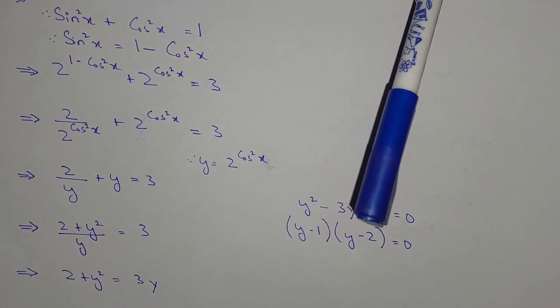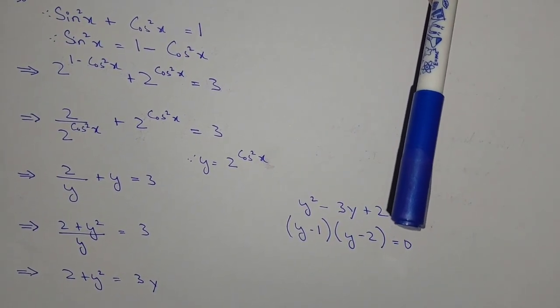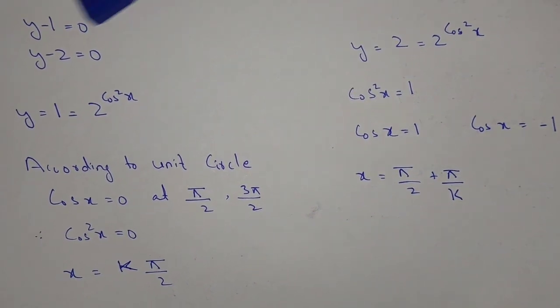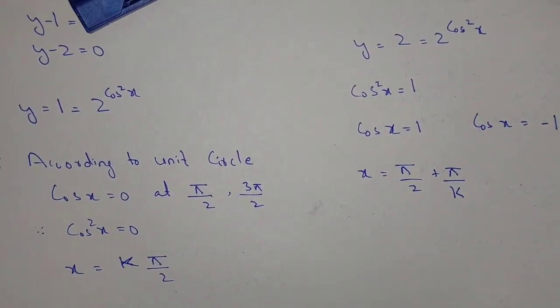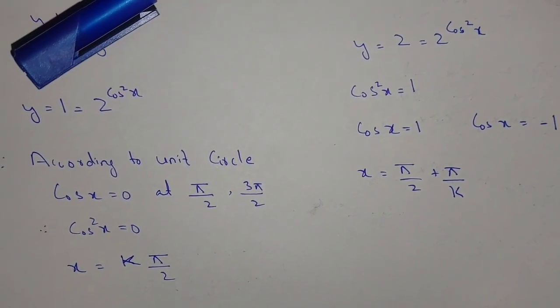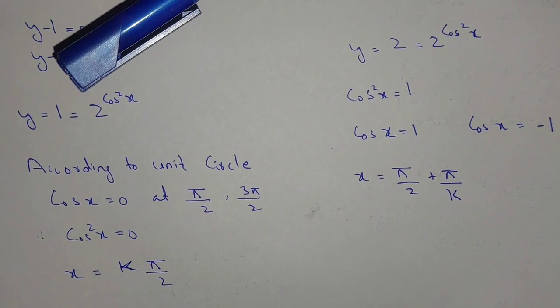Now factorizing, we get (y - 1)(y - 2) = 0. Here we have two equations: y - 1 = 0 and y - 2 = 0.